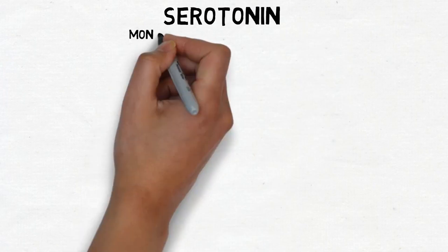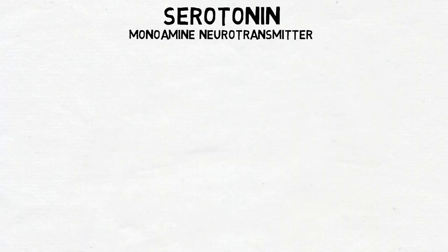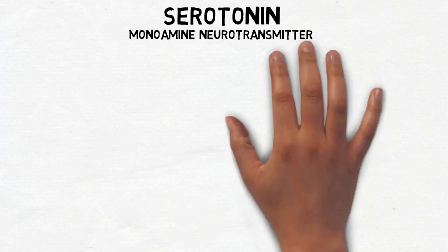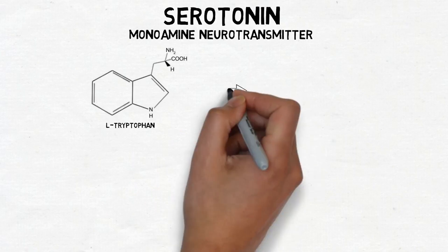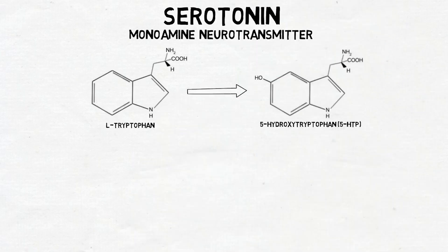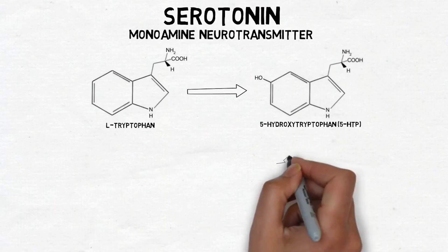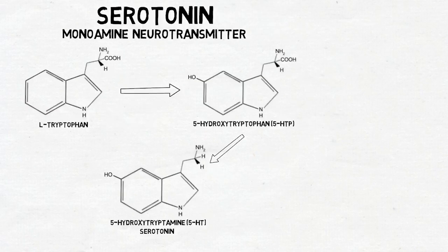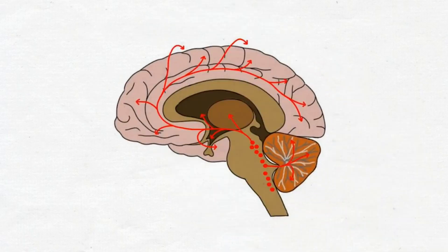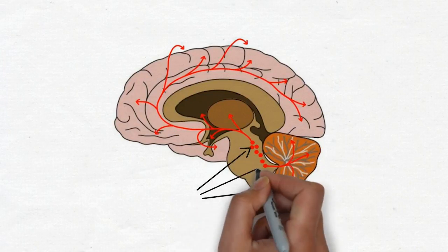Serotonin is a monoamine neurotransmitter, a term that refers to its chemical structure and the fact that it is derived from an amino acid. To synthesize serotonin, the amino acid tryptophan is converted to 5-hydroxytryptophan, or 5-HTP, and 5-HTP is converted to serotonin, or 5-HT. Serotonin neurons are primarily found in the brainstem, in clusters of neurons called the raphe nuclei.